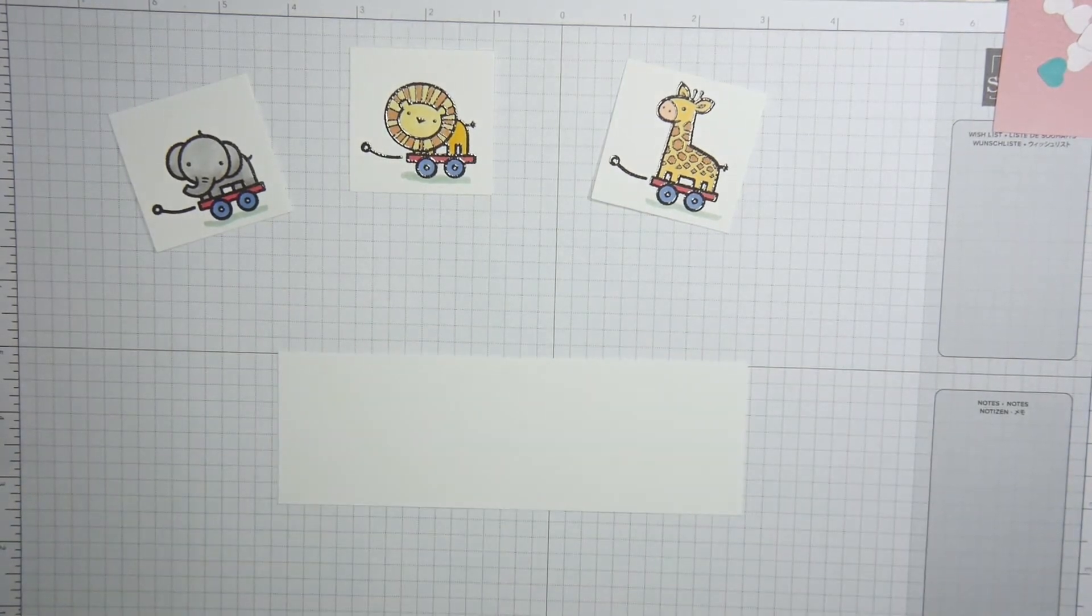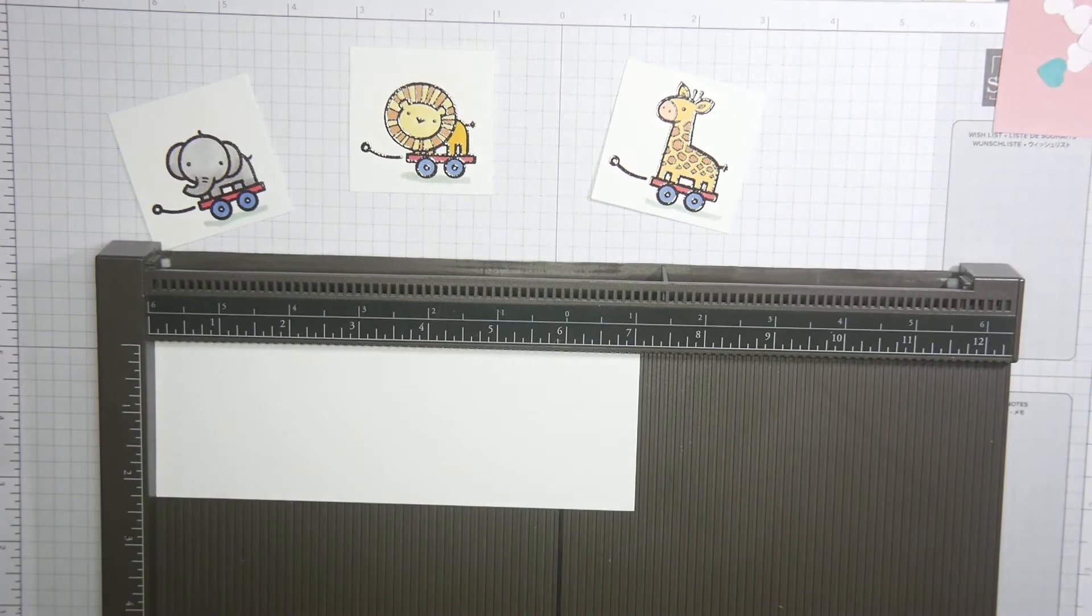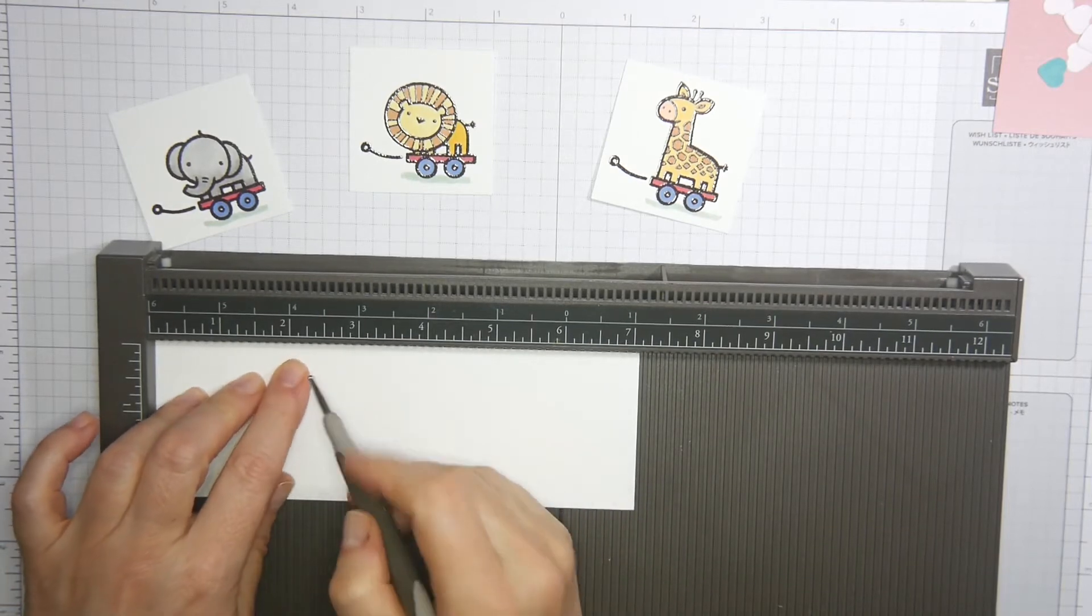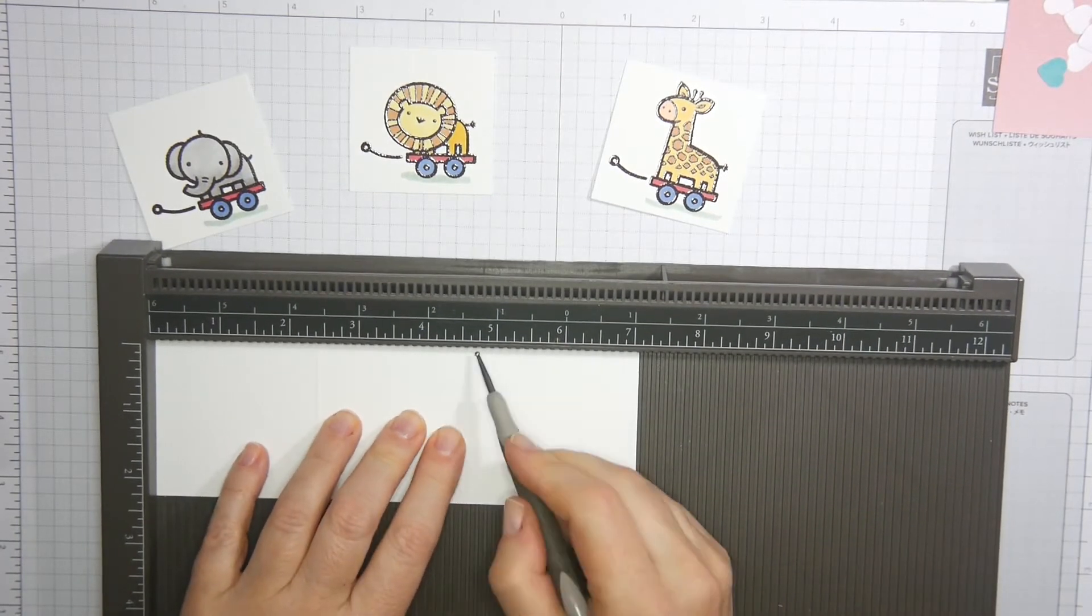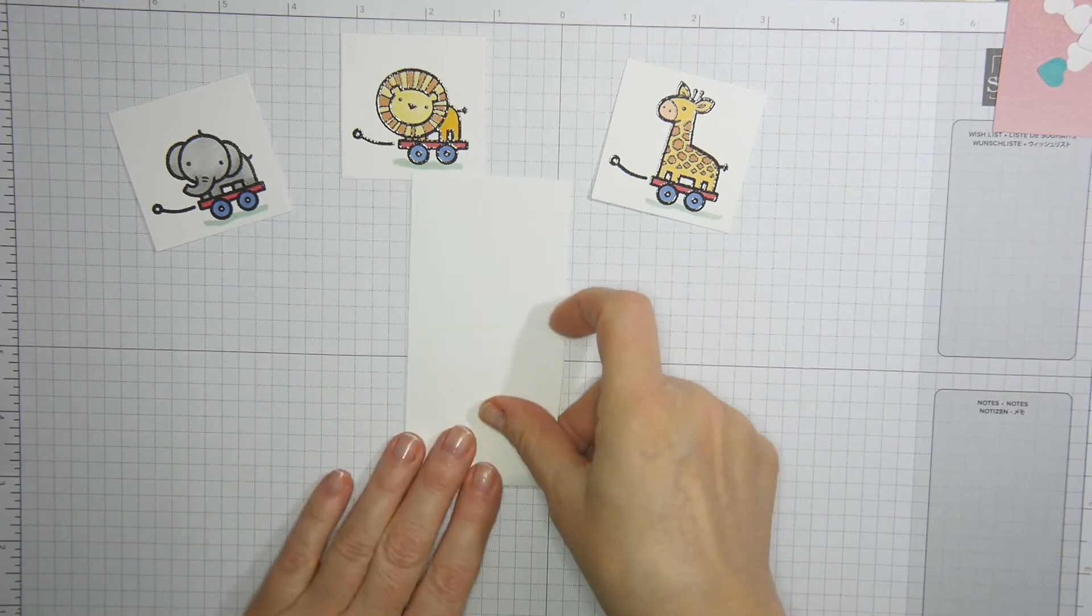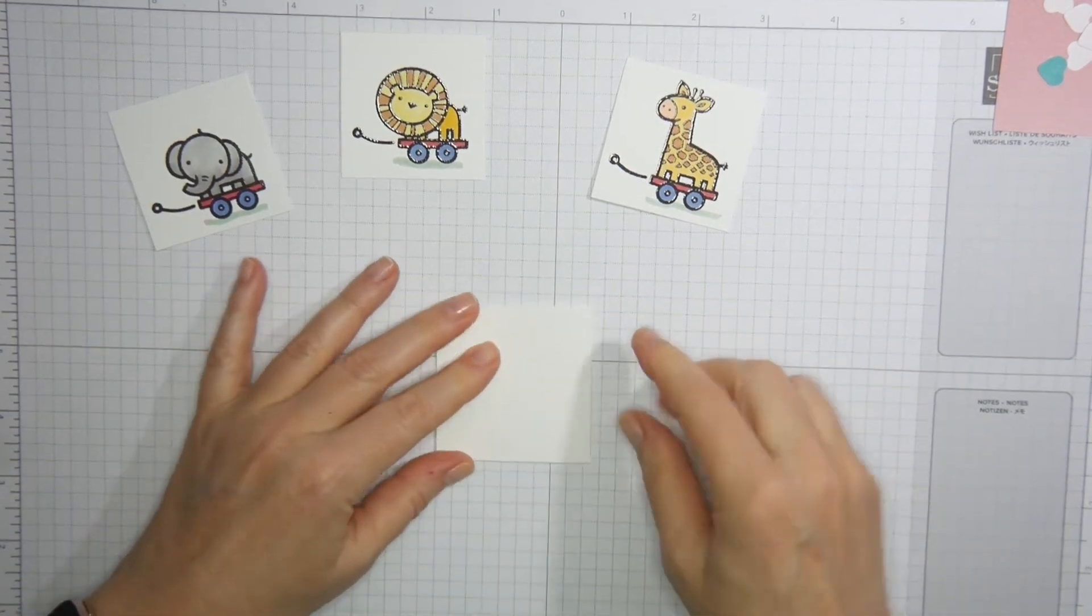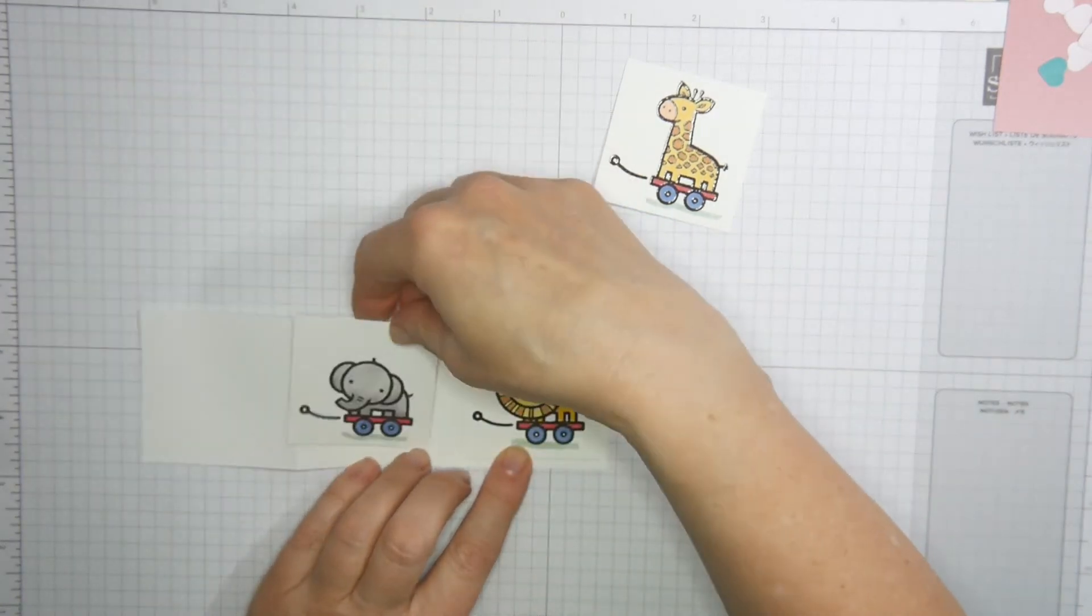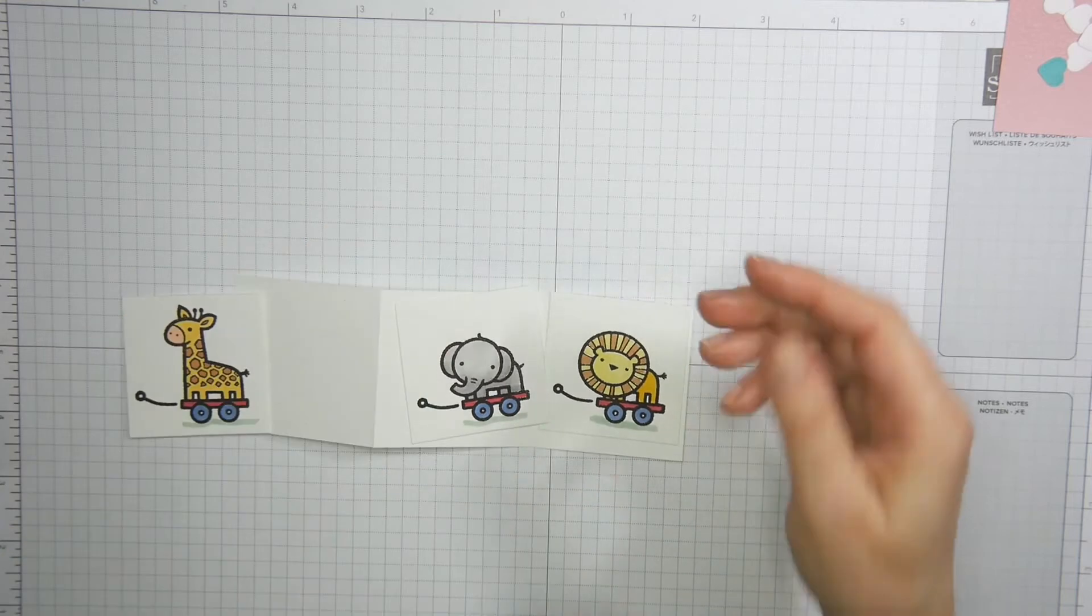These are my three images. And here I have the strip of Whisper White. And now I can see it is 7 and 1/8 by 2 and 3/8. And I'm going to score that at 2 and 3/8. And then you flip the paper and you score at 4 and 3/4. And then you can fold it. And this is how it's going to be on your card. So I want my lion there, the elephant in the middle, and my giraffe there.